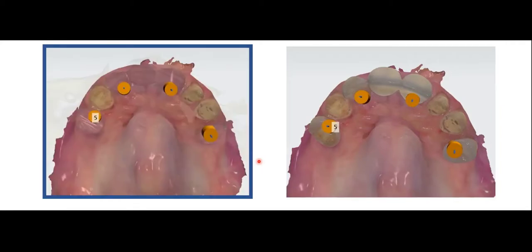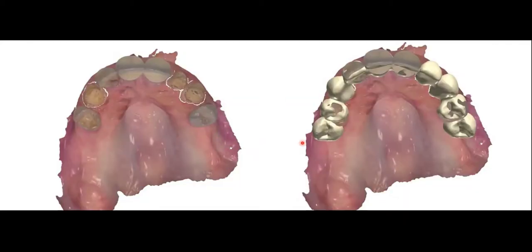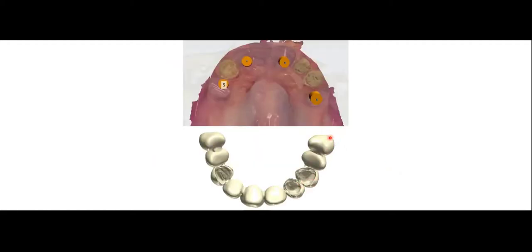With the design software, we virtually extract the remaining teeth, keeping only the planned abutment teeth. We merge the implant plan with the design software as if the implants had already been placed and an impression taken. We then design the provisional restoration — she liked the way her teeth looked, so we replicated her existing dentition. The result shows cantilevered teeth on either side and abutment sites corresponding to the planned implant positions.